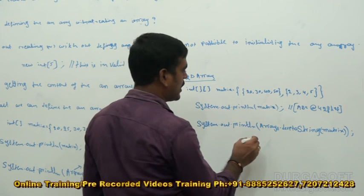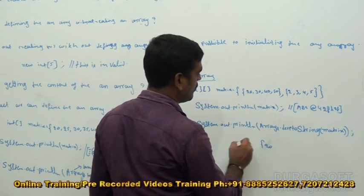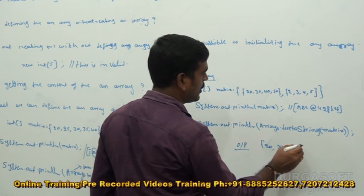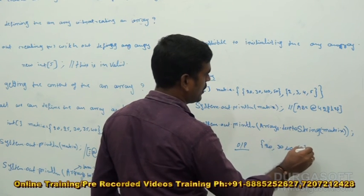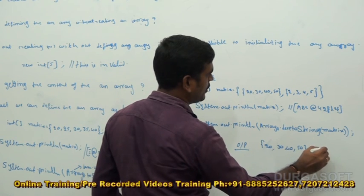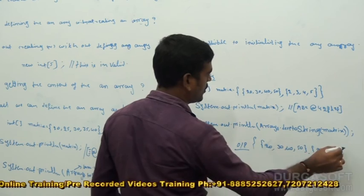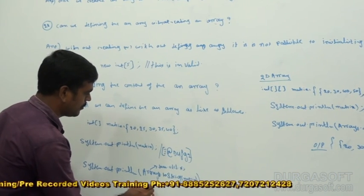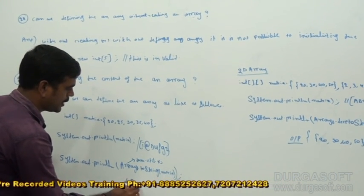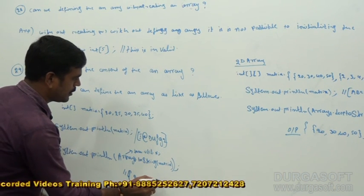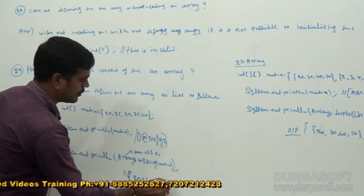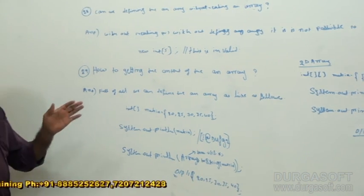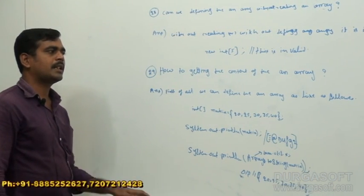Here it is going to print the actual content. What is the content? The output is: 20, 30, 40, 50 and then 2, 3, 4, 5. For the 1D array example, the output is: 20, 25, 30, 35, 40. By using the Arrays class, we can print the content directly.